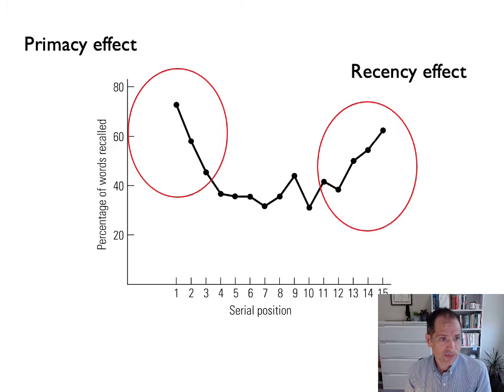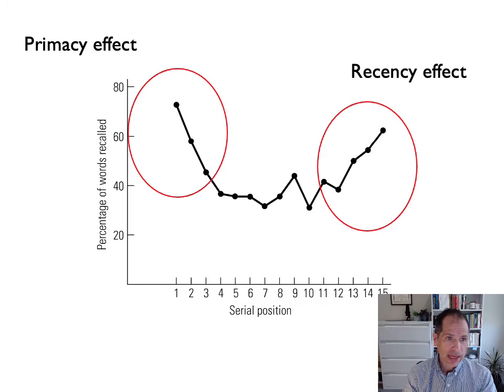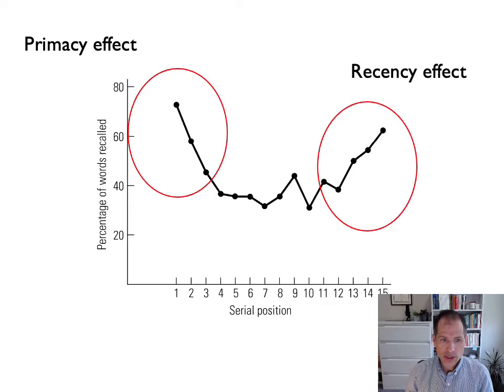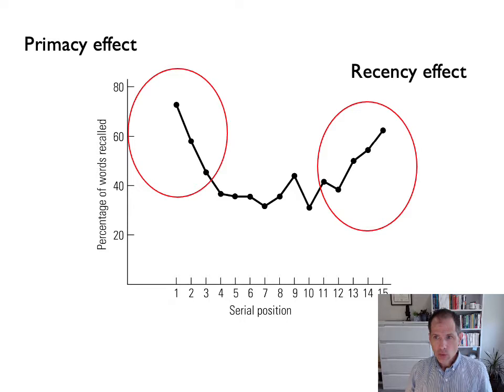Let's look at some hypothetical data of a serial position effect. On the y-axis you'll see the percentage of words recalled. At the beginning we've got about 75% correct, and that's about the same for the words at the end of the list. On the x-axis you'll see the serial position — the order in which the words were originally learned. Performance is good for words 1, 2, and 3, not so good for words 4 through 13, and then it improves for 13, 14, and 15.